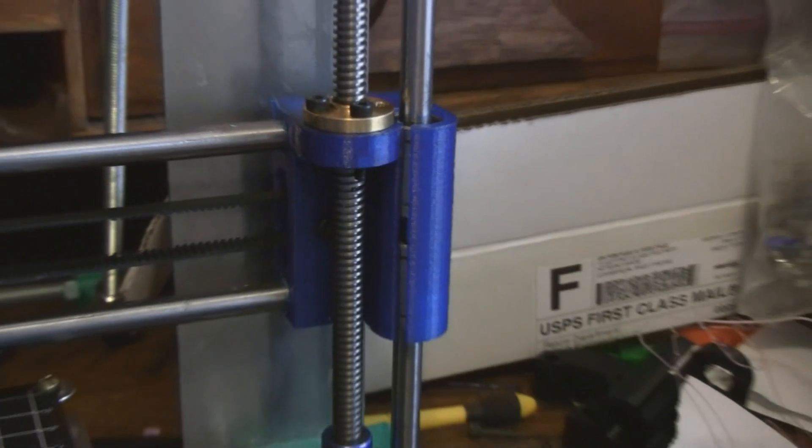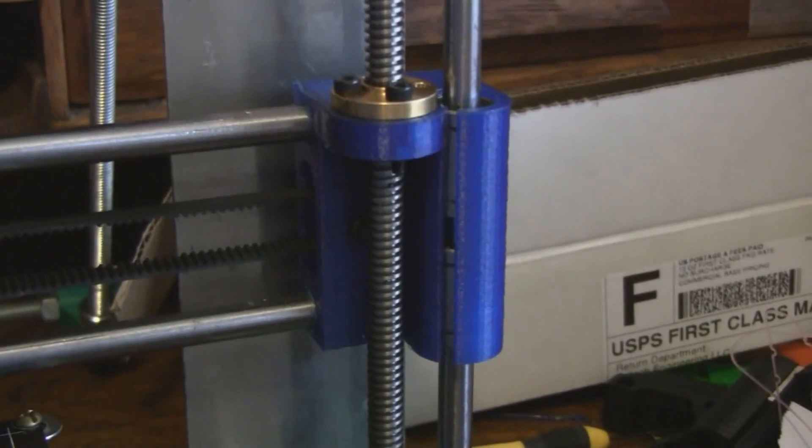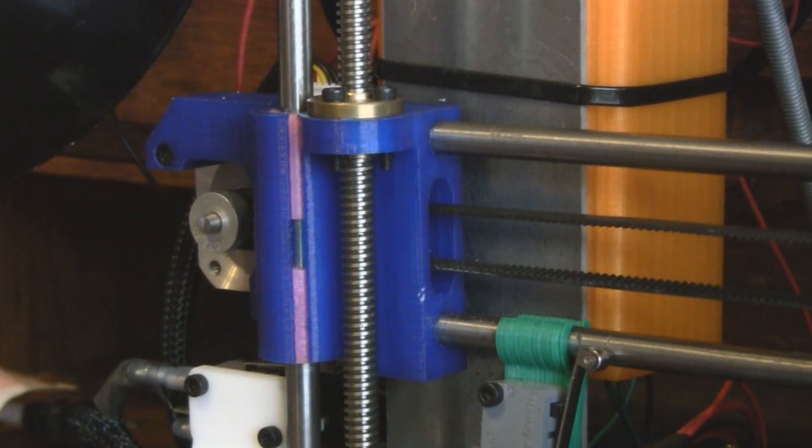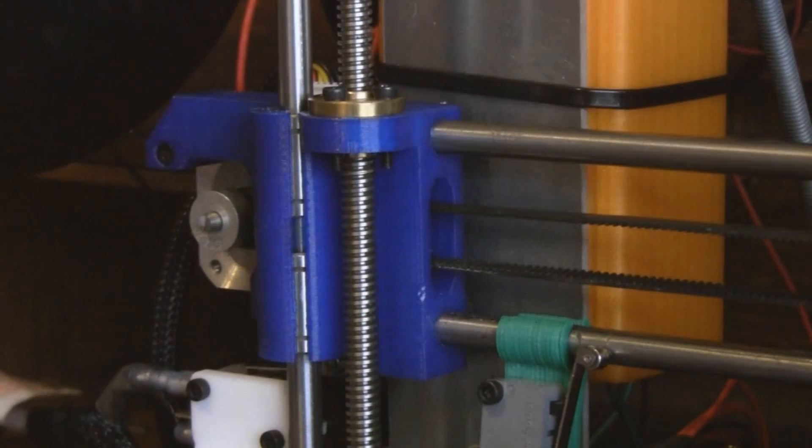So there's one Z idler complete, and now all there is to do is the other side. The other side is actually a whole lot easier to install—not because you have a better understanding of what you're doing the second time around, but because all you gotta do is wave your hands around like this, and that's it.